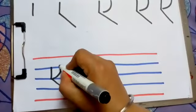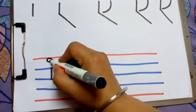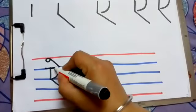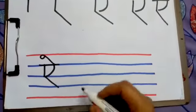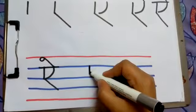And then one sleeping leg. Let me show you once again. Small slight standing line, then a slanting line, a curve from here.